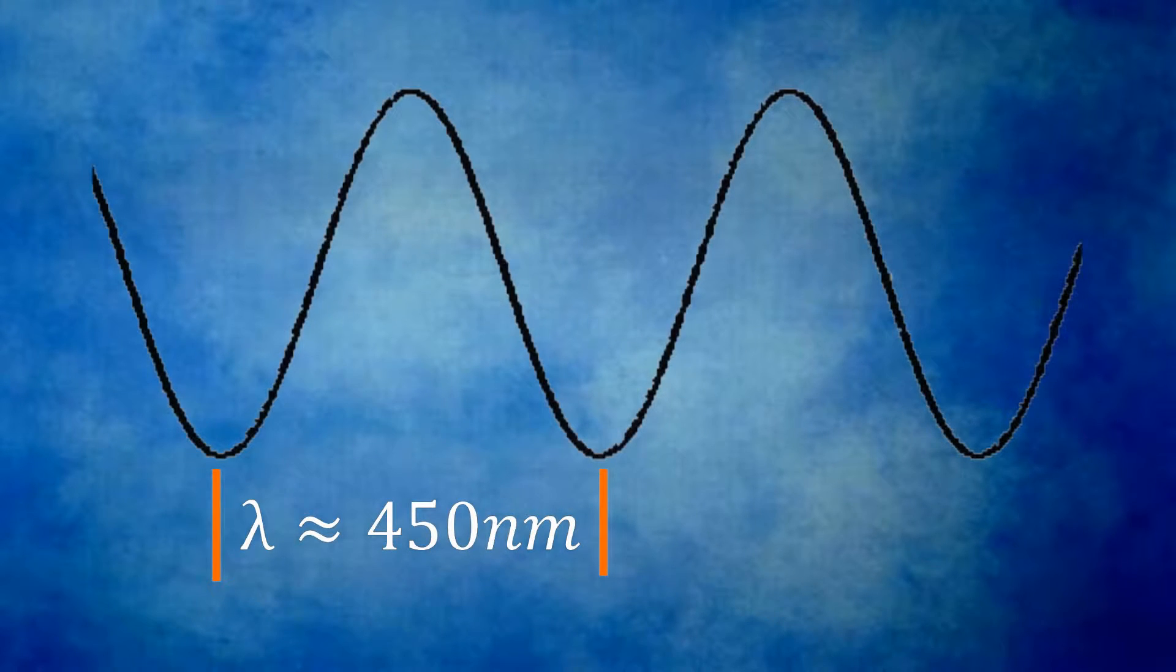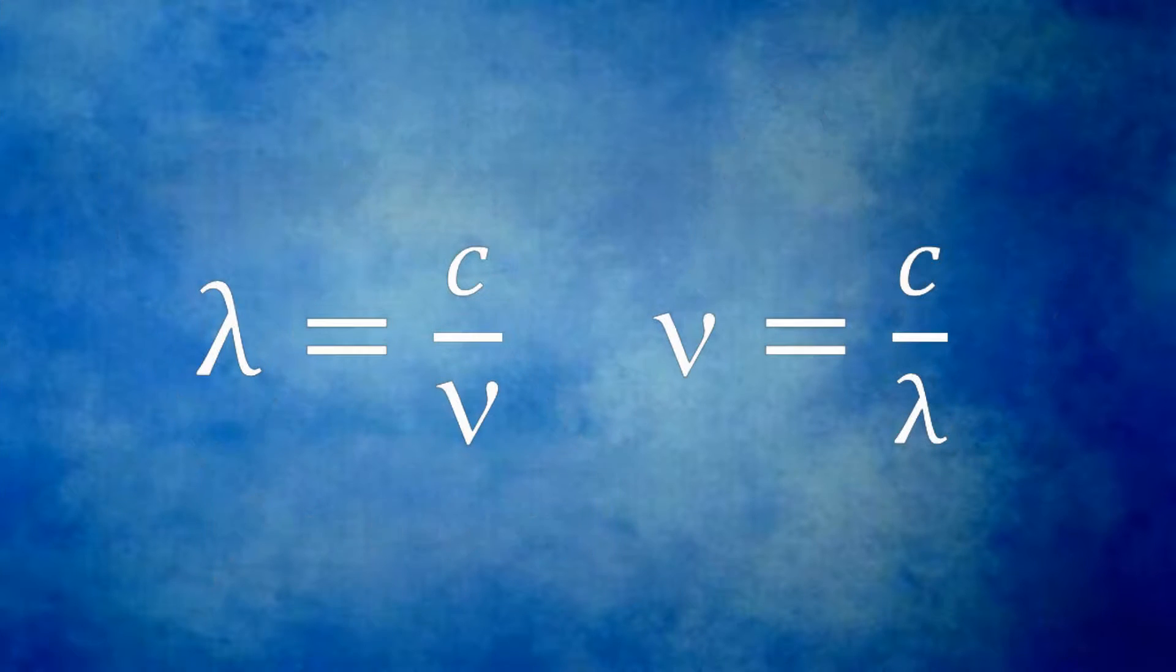And finally, light has a certain wavelength, and this is around 450 nanometers. The speed of light, its wavelength, and frequency are all interrelated. Now we can talk about light by its frequency, or we can refer to it by its wavelength. Most commonly, we refer to light by its wavelength.